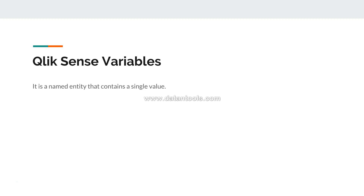In Qlik Sense, a variable is a named entity that contains a single value. You can assign a fixed value or an expression to a Qlik Sense variable. So you have two ways: either a fixed value — for example, a name or a numerical value — or an expression like sum of sales, average sales, or a more complex expression like set analysis.